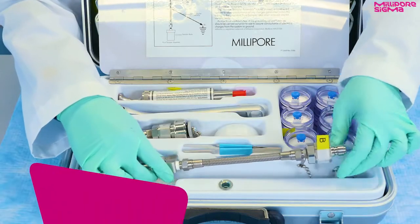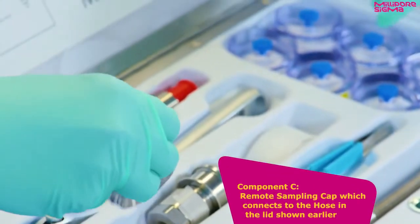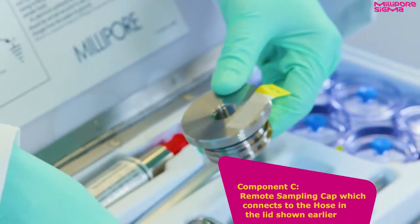Component B is the sampler assembly, which comes with its own cap. Component C is the remote sampling cap, which connects to the hose and the lid shown earlier.